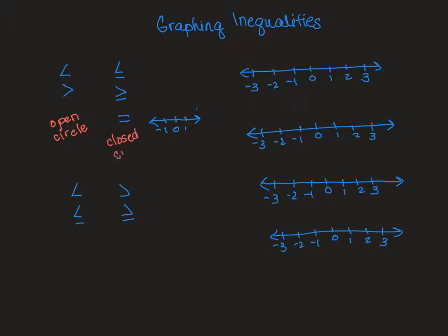If I had just equal to — for example, x is equal to 1 — that would be a closed circle with no arrows, because it's just equal to 1. It can be 1, and that's a closed circle. You should have experience doing that.